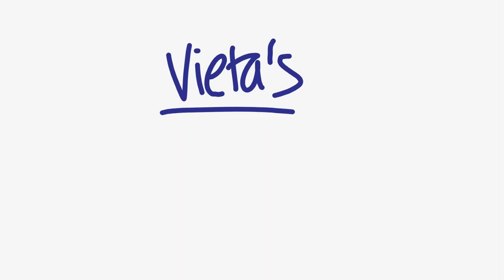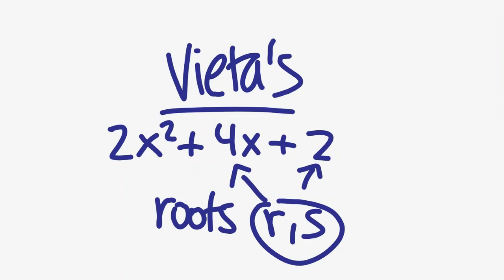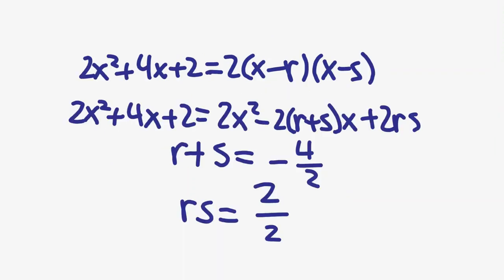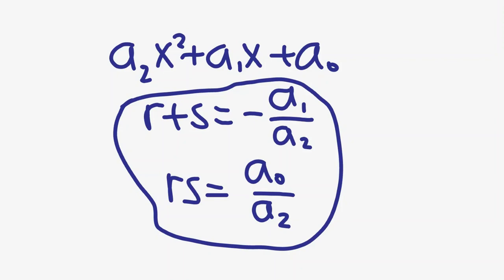It's basically just a way to write a polynomial's coefficients in terms of its roots. Vieta's formulas can be derived by writing a polynomial as the product of its factors and multiplying out without adding together the coefficients of like terms. If you still don't understand, here's an example of Vieta's formulas derived from a quadratic.